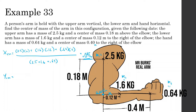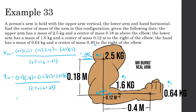For the y-direction: the 2.5-kilogram upper arm is 0.18 meters above the elbow, so (2.5)(0.18). The lower arm (1.6 kg) is on the zero y-axis, so 0. The hand (0.64 kg) is also on the zero y-axis, so 0. Divide by 2.5 plus 1.6 plus 0.64. This also gives approximately 0.095 meters. So the center of mass is at (0.095, 0.095) meters.